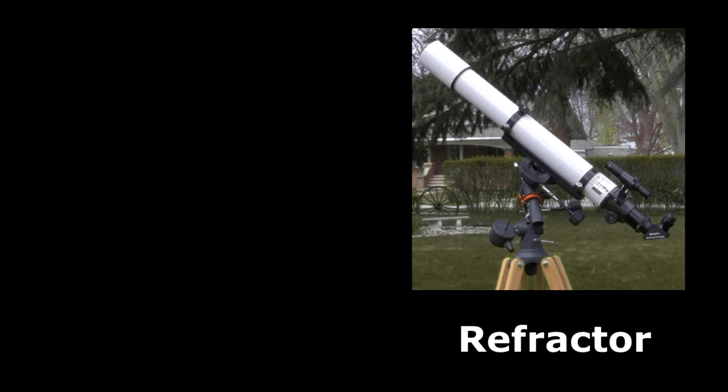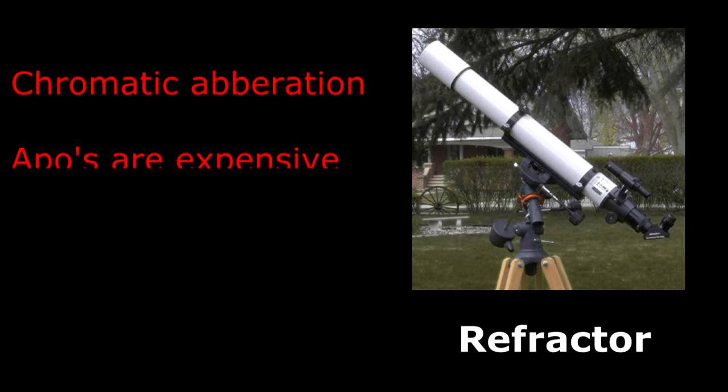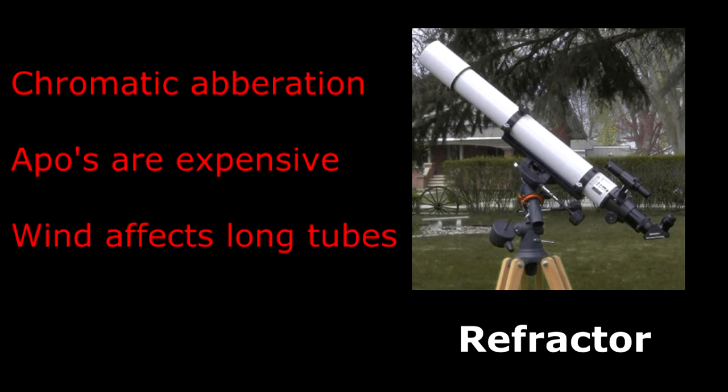Some disadvantages include chromatic aberration in achromats, where not all wavelengths of light focus in the same place. Apochromatic designs, though overcoming chromatic aberration, are usually 3 to 5 times as expensive. In longer focal lengths, the long tubes can sway in the wind or on inexpensive mounts. Larger models place eyepieces uncomfortably low.